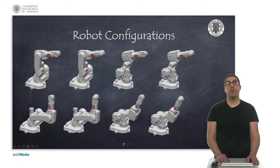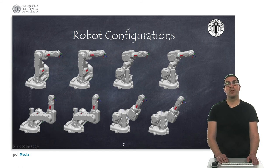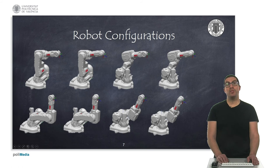Robots can adopt multiple configurations to achieve a given position and orientation. Specifically, robots with six degrees of freedom could reach up to eight possible configurations for the same position and orientation, as shown. The configurations in the first row are elbow-up configurations, while the configurations in the bottom row are elbow-down configurations. Joints one, four, and six of the robot can each adopt two possible configurations, resulting in a total of eight possible combinations. The importance of knowing these configurations lies in the fact that some of them may collide with objects in the environment while others may not, and some are closer to joint limits, which might leave little margin for maneuvering and are generally avoided unless necessary.